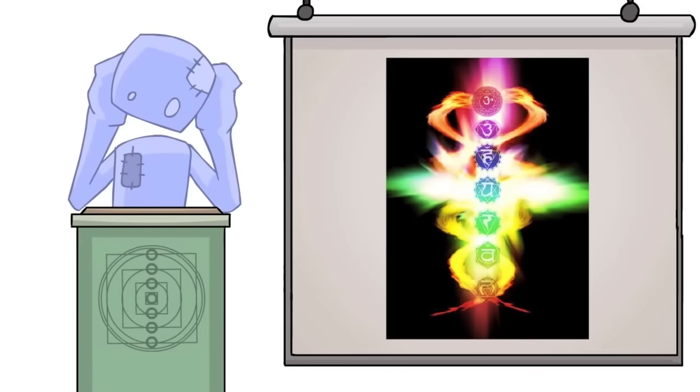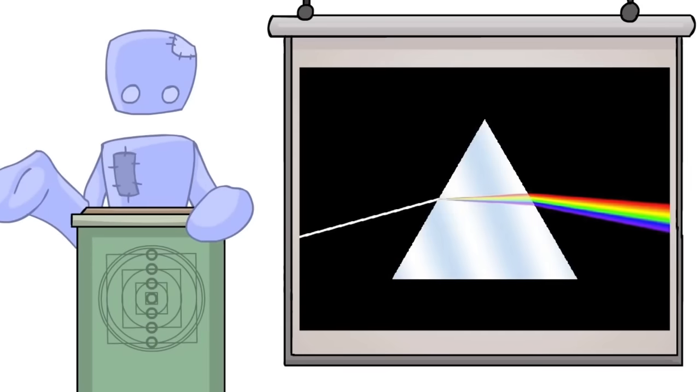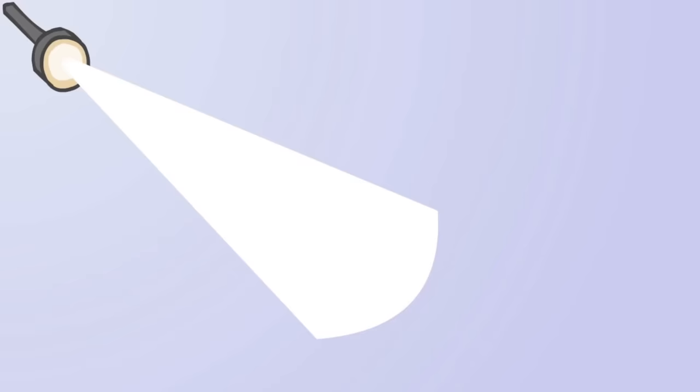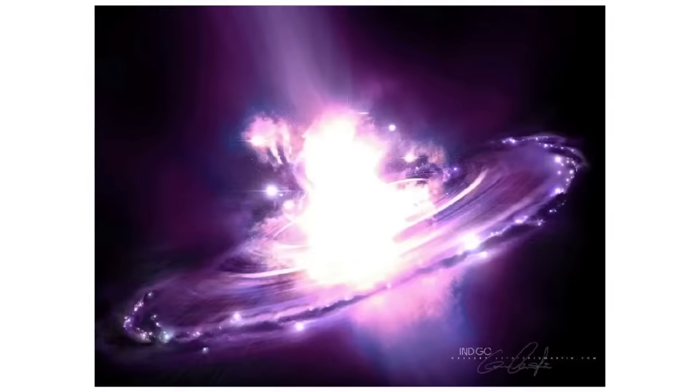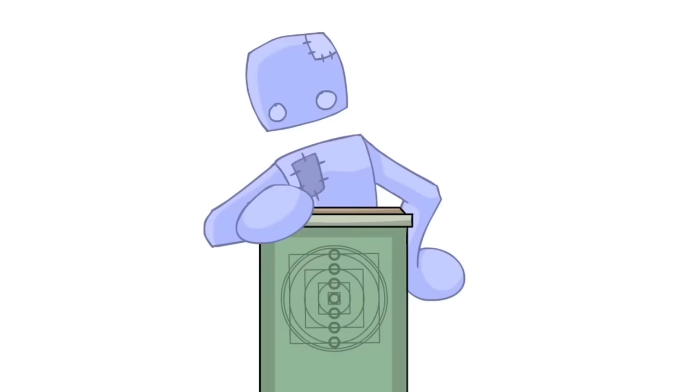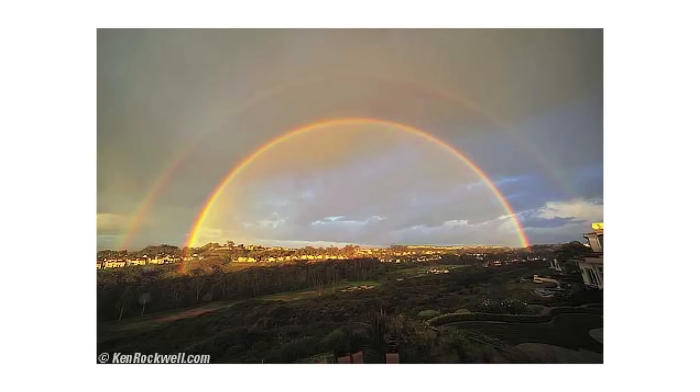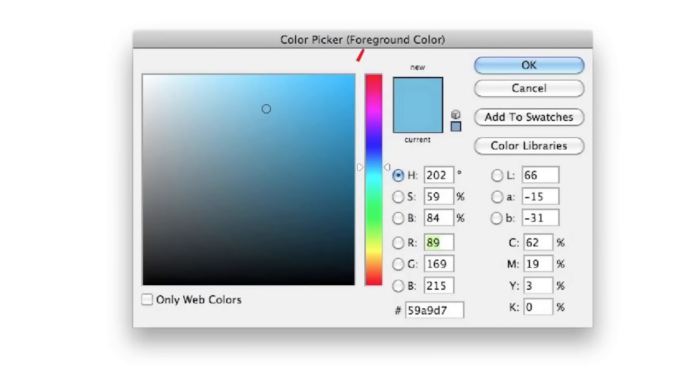Now, for us to even start to understand chakras, first we have to understand the basics of light and color. If you take pure light and shine it through a prism, the light will break into a spectrum of seven colors: red, orange, yellow, green, blue, indigo, and violet. We familiarly recognize this as the spectrum of the rainbow, or even more familiar, the basic palette in Photoshop.